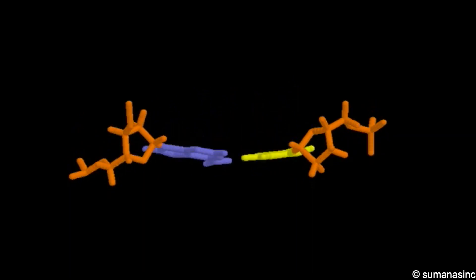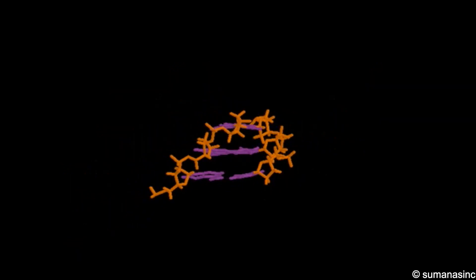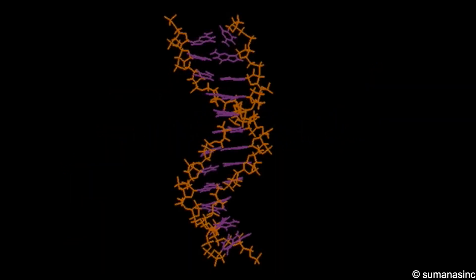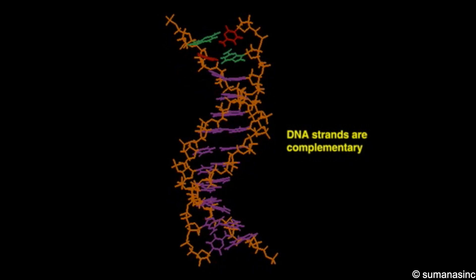The specificity of base pairing, that is, C always pairing with G and A always pairing with T, ensures that the two strands are complementary. This is important for DNA replication and transcription.